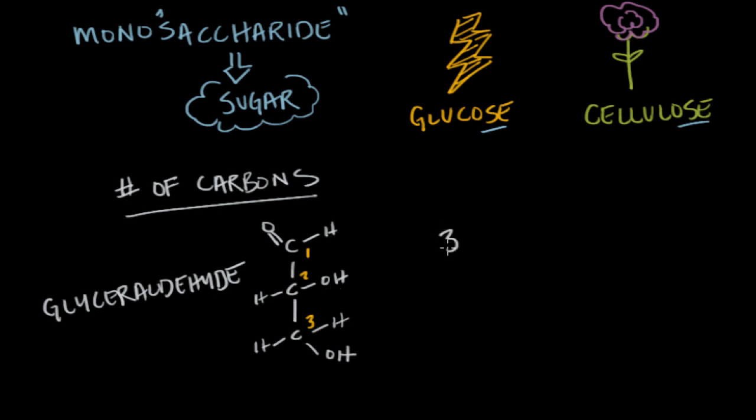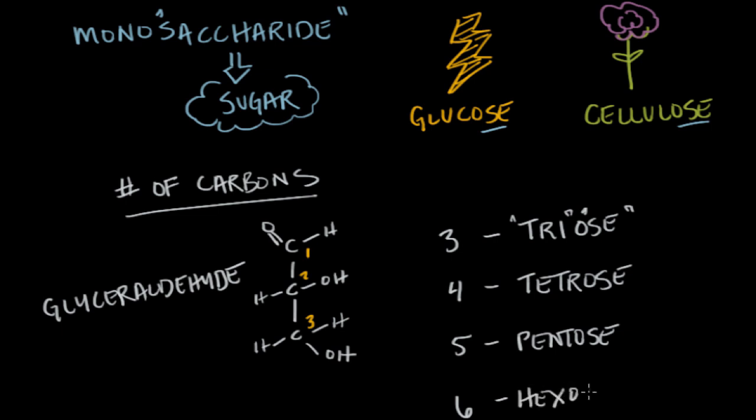And so there are three carbons. And for that reason, we would call this a triose. Tri for three, and -ose as our suffix for sugar. And if we added a fourth carbon, we would call it a tetrose. So four carbons in a carbohydrate chain is a tetrose. And then we add a fifth carbon, and that would be a pentose. So pentose for five. And if we added an additional carbon, we would have six carbons, and that would give us a hexose. Hex being the prefix for six.